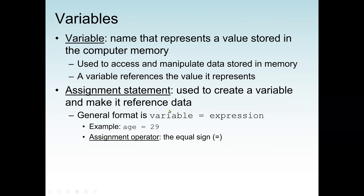The syntax is: to the left is the variable name, and to the right is the expression. For example, we create a variable named 'age' and assign 29, which means 29 is stored in the variable age. If I print the content of age, it will print 29. The equal sign in computer programming means assignment, not equality. To check if age equals 29, we use two equal signs — we'll cover that in selection statements.